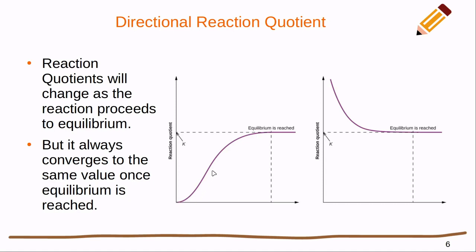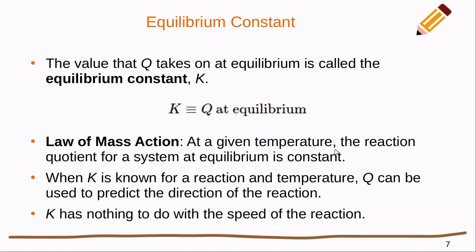As the reaction proceeds from all reactants, Q becomes greater and greater until it levels off at equilibrium. Starting from all products and zero reactants, we'd have some number divided by zero, so Q starts at infinity and comes down until it levels off. In either situation, Q eventually converges to the same value, which we call K — the equilibrium constant.